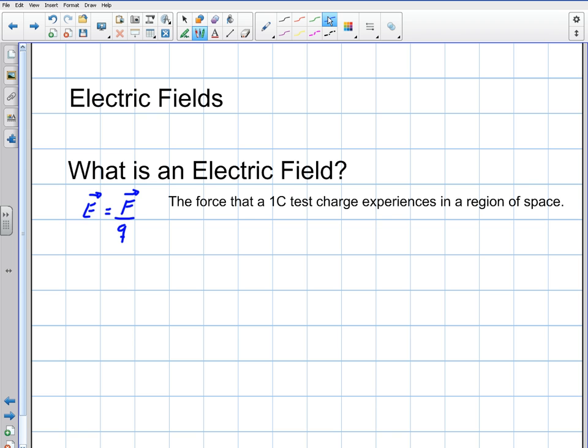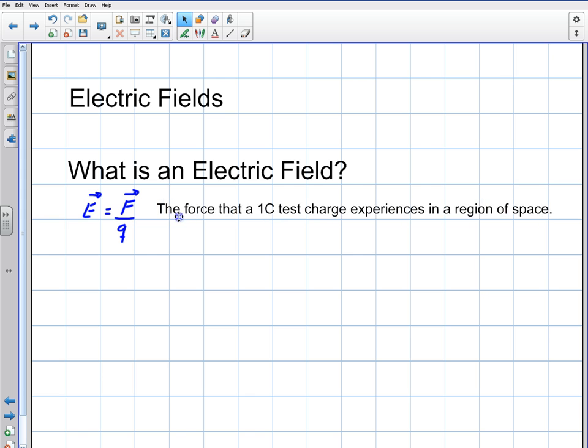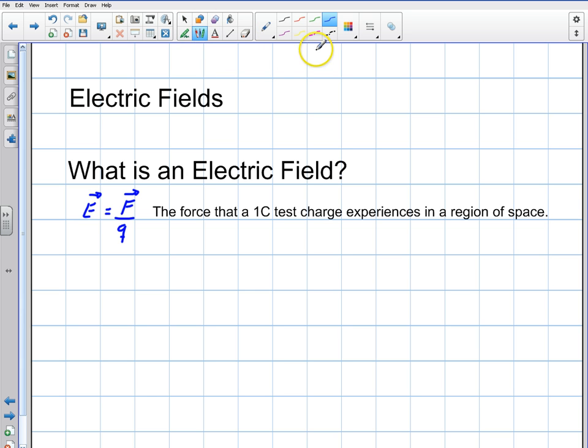And so you could also just define it informally as this. An informal way to say this is that it's basically the force that a one coulomb test charge experiences in a region of space. So if I take a charge and I place it in a region of space and there's a force, then we know there's a field. That's kind of how we measure it. So it's going to be a force per unit charge.